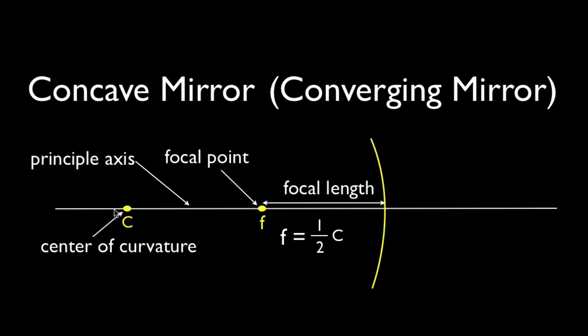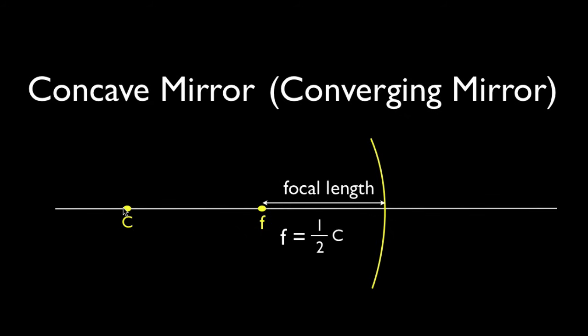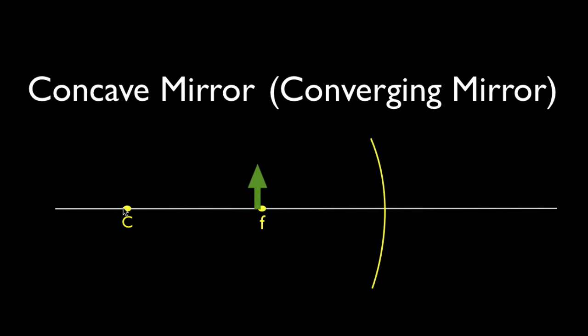For the convex lens video, we had F and 2F, where 2F was twice as far away as F. Now we have F and C, where C is twice as far away as F. So C and 2F are analogous positions on the principal axis — it's just that for a mirror we call it C, the center of curvature. We want to be able to draw the ray diagram regardless of where we place the object: whether beyond C, at C, between C and F, at F, or inside of F.